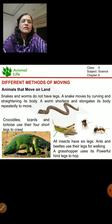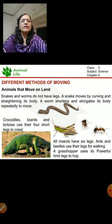Some animals cannot walk - they can crawl. Like snakes and worms. They do not have legs, so they crawl. How do they crawl? They curl themselves and then straighten up again to move.